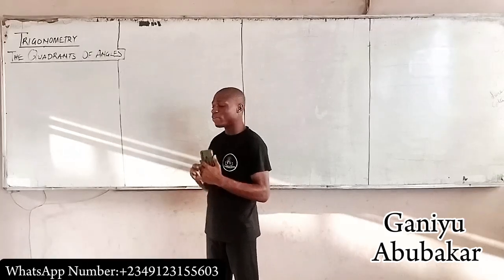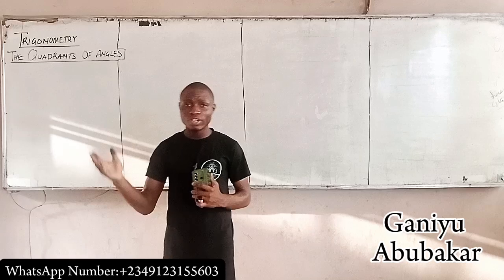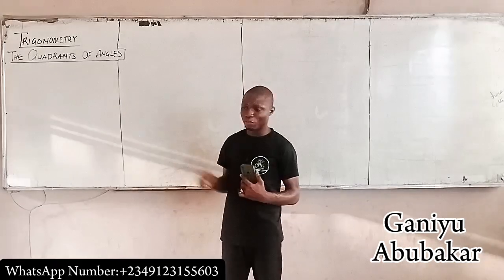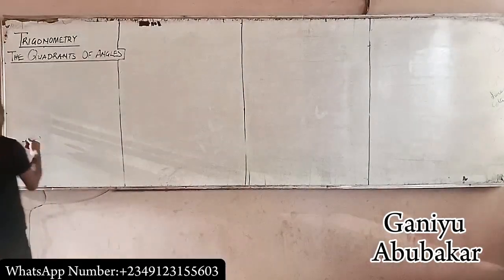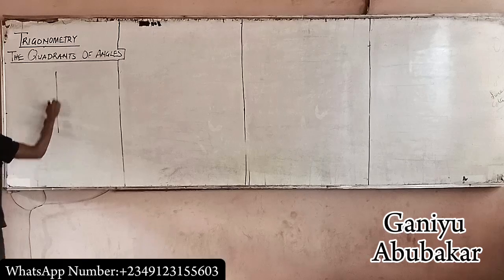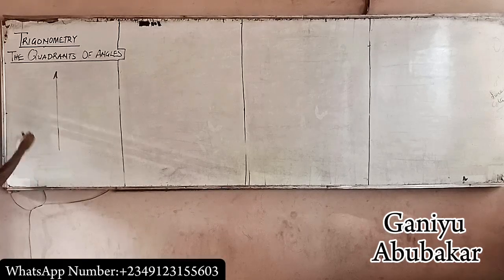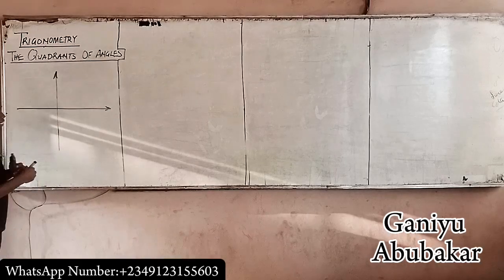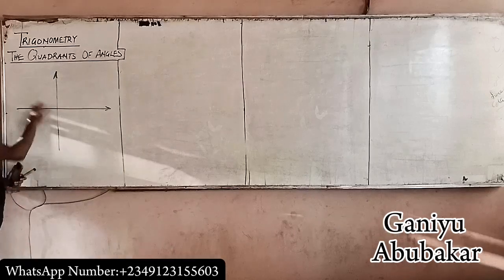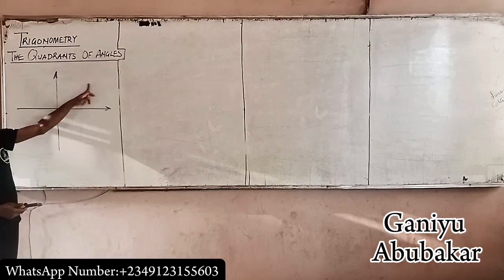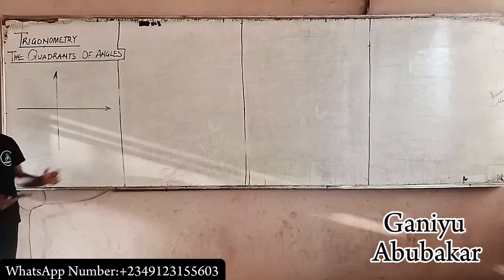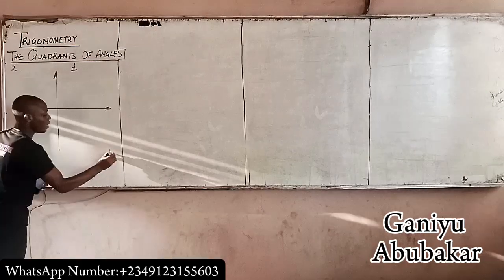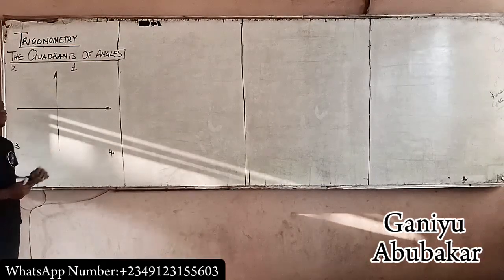In real life we have four quadrants: first quadrant, second quadrant, third quadrant, and fourth quadrant. Let's consider a graph. We have the x-axis and the y-axis, giving us four quadrants. We call them the first quadrant, second quadrant, third quadrant, and fourth quadrant.